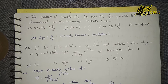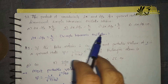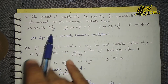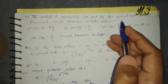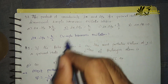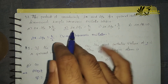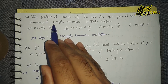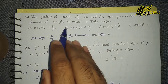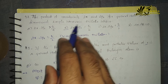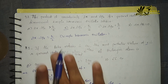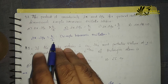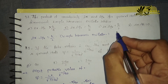Now let's go for question number 37. The product of uncertainty Δx and Δpx for the ground state of a one-dimensional simple harmonic oscillator — in the case of a simple harmonic oscillator, the product of uncertainty in position and uncertainty in momentum will be equal to ℏ/2. This is something you have to remember.